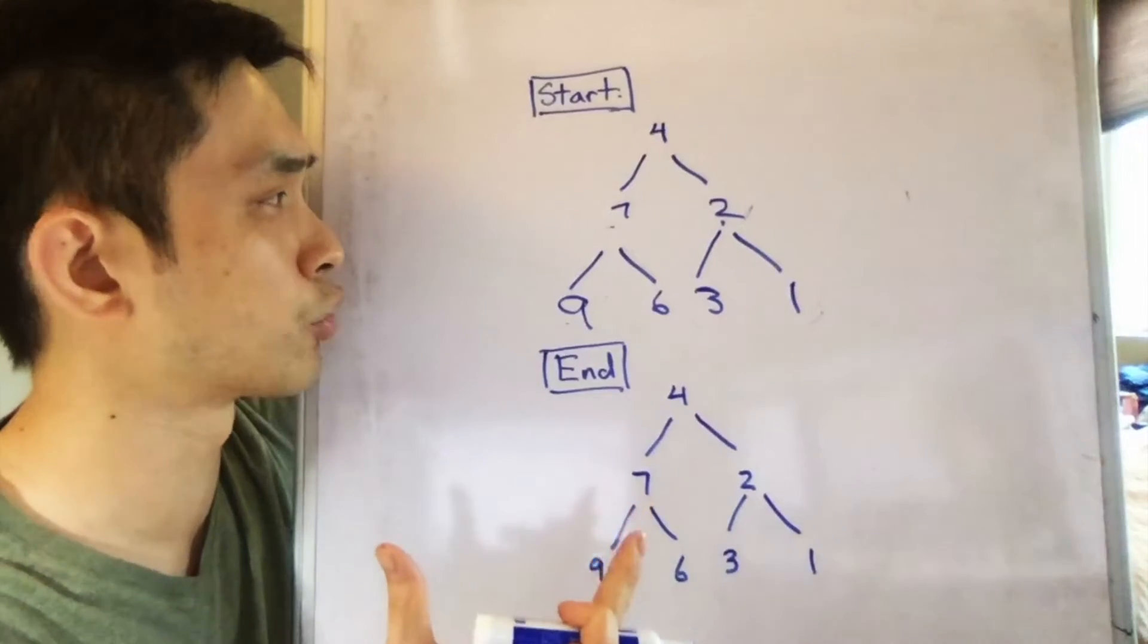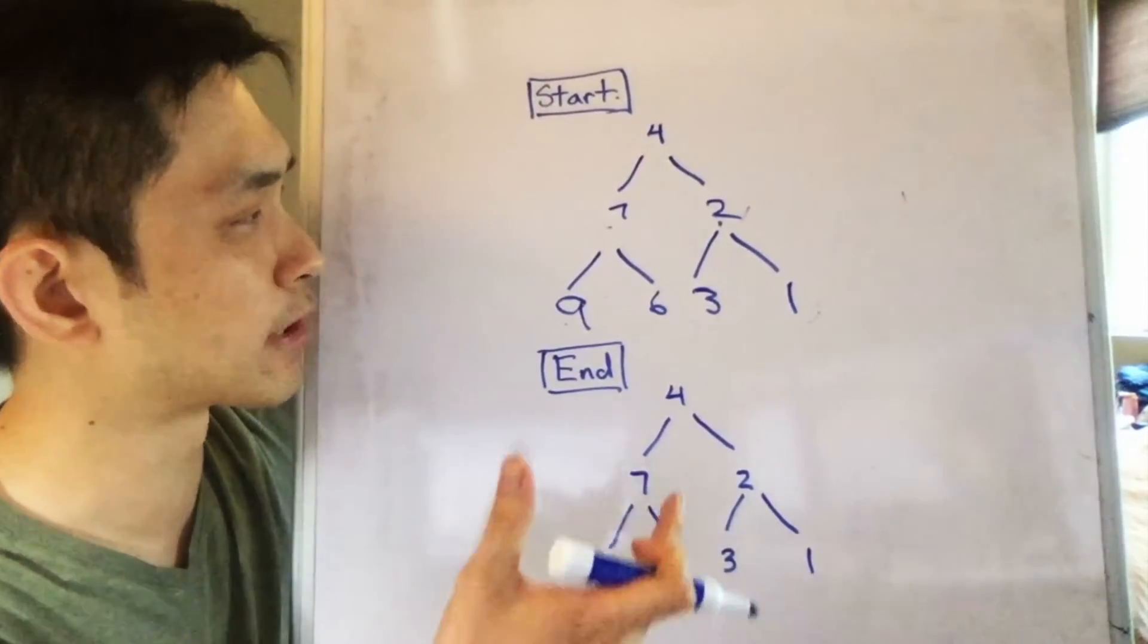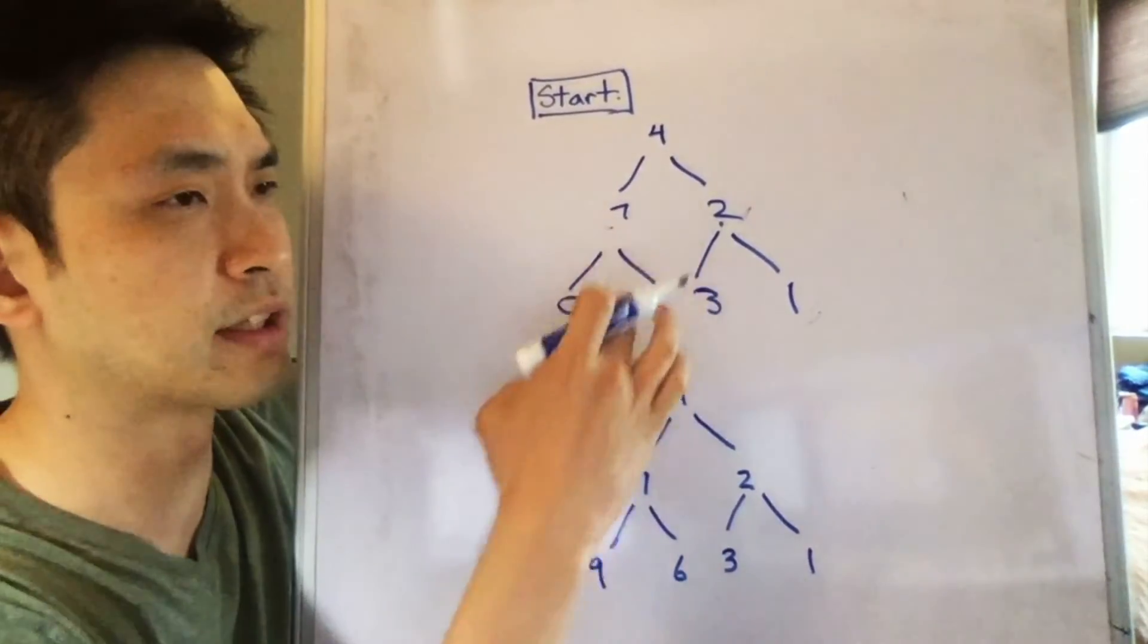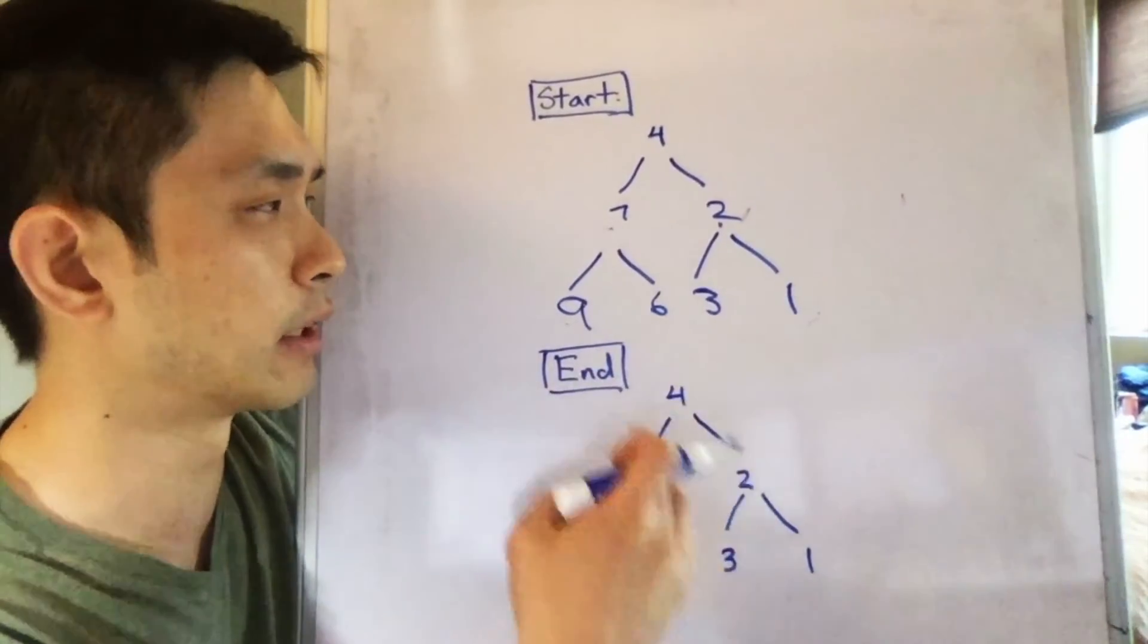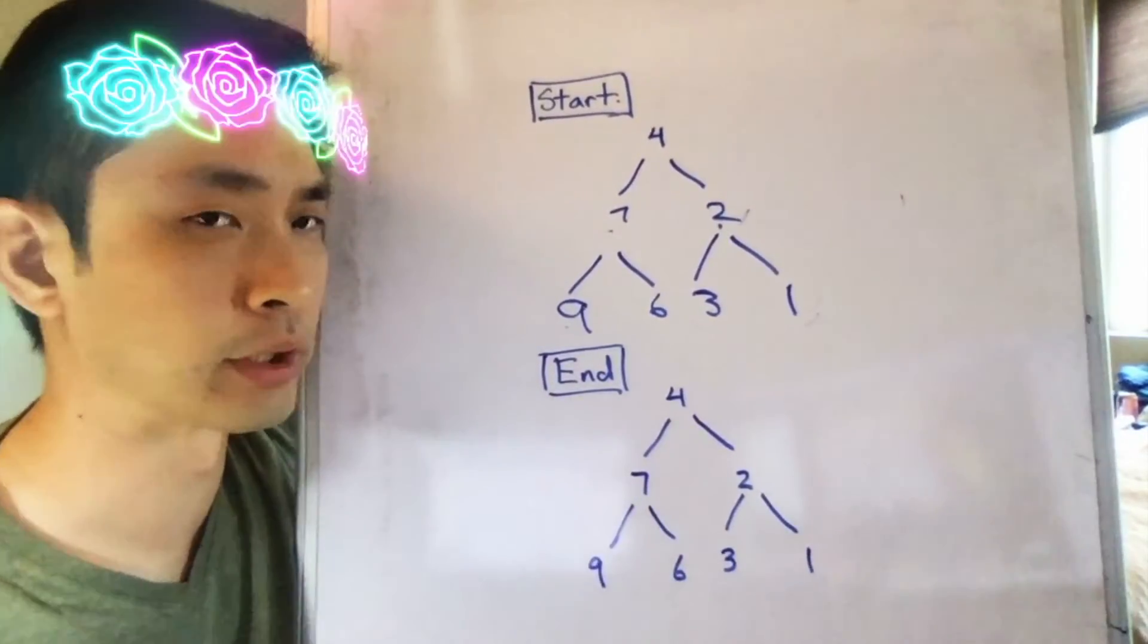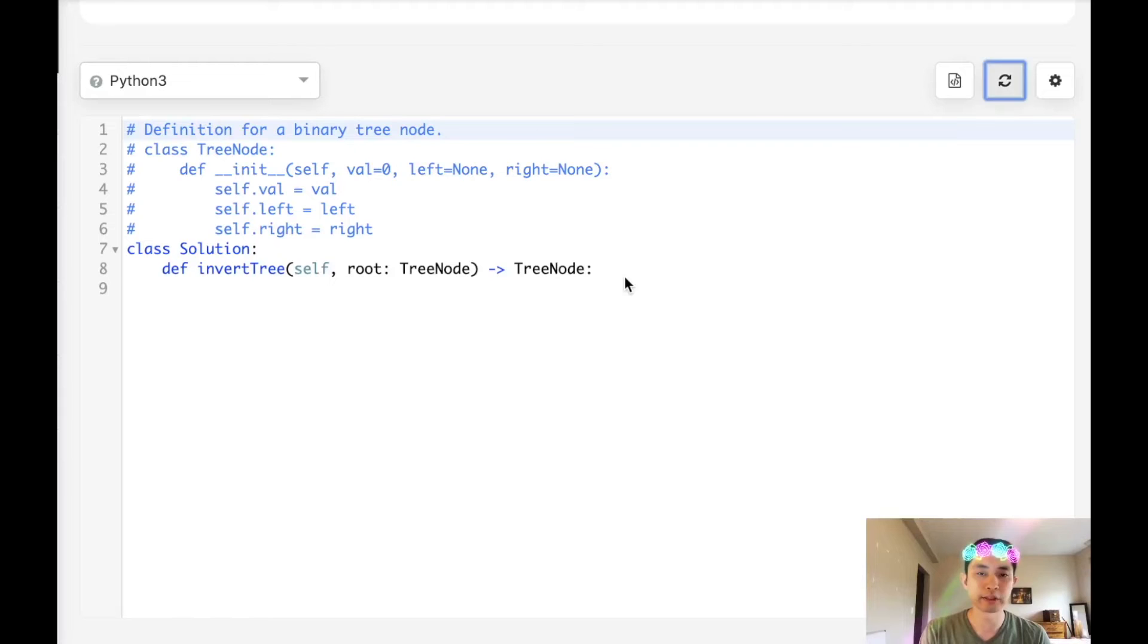So the key to these binary search tree problems, like one of the first things you want to ask is: is there some action we can take at each tree in what order to get our final output. Now let's code out our solution.